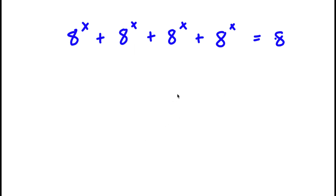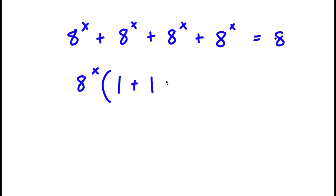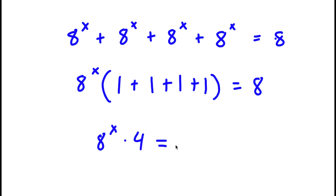Welcome back. In today's video I'm going to be teaching you how to solve this exponential problem. So a to the power of x plus a to the power of x plus a to the power of x plus a to the power of x is equal to 8. What I'm first going to do is factor out a to the power of x from my left-hand side. So now I have a to the power of x times 1 plus 1 plus 1 plus 1, and this is equal to 8. Now 1 plus 1 plus 1 plus 1 is 4, so I have a to the power of x times 4 is equal to 8.